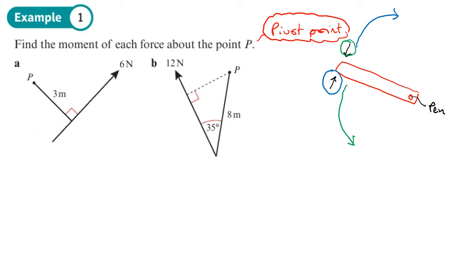Looking at part (a): the pivot point is here, the force of 6 Newtons is applied, and the perpendicular distance is 3 meters — you can see the right angle there, confirming the force and ruler are perpendicular. So the moment is 6 times 3, which gives 18 Newton meters.